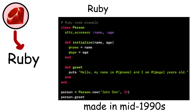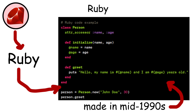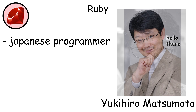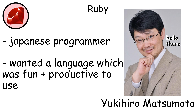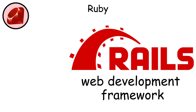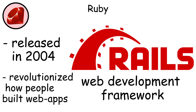Ruby was created in the mid-1990s by Yukihiro Matsumoto, a Japanese programmer who wanted to design a language that was fun and productive to use. What made Ruby famous was Ruby on Rails, a web development framework released in 2004 that revolutionized how people built web applications.